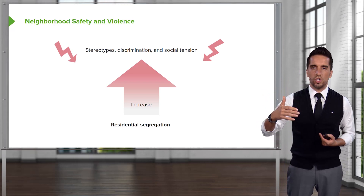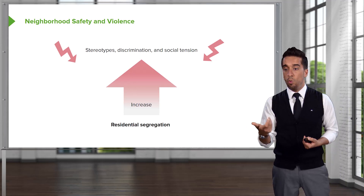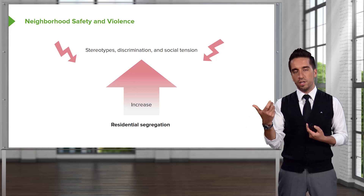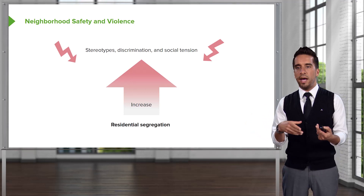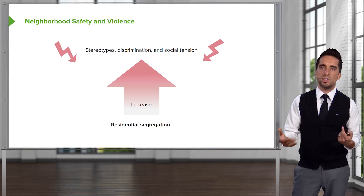Think of two neighborhoods where one might have preconceived stereotypes about the other and say 'I don't want to live there.' In that transitionary area where two neighborhoods meet or overlap, you might see issues in terms of safety and violence.